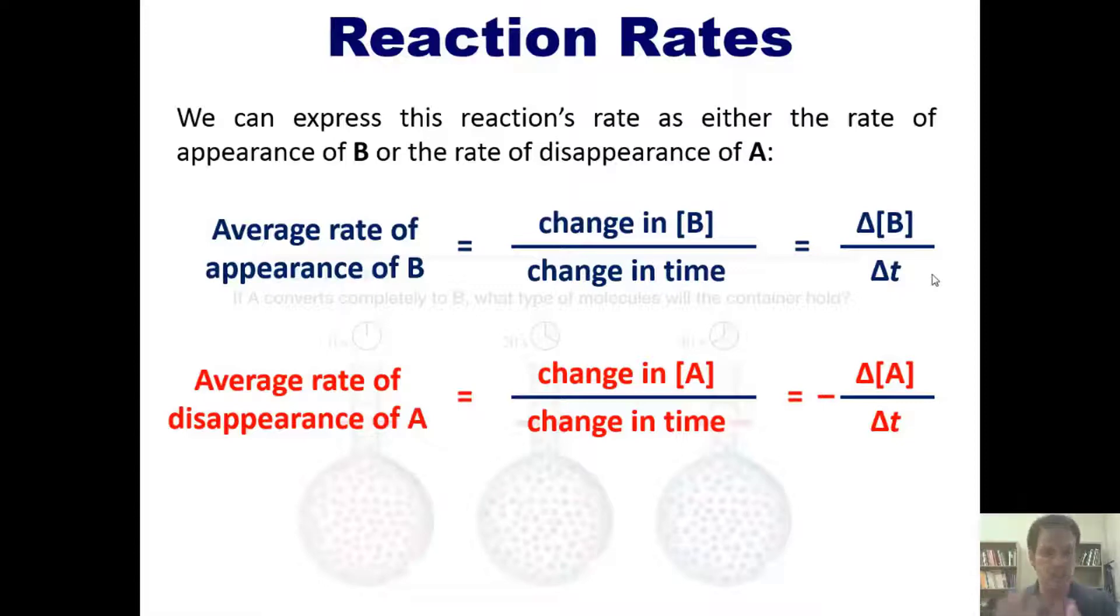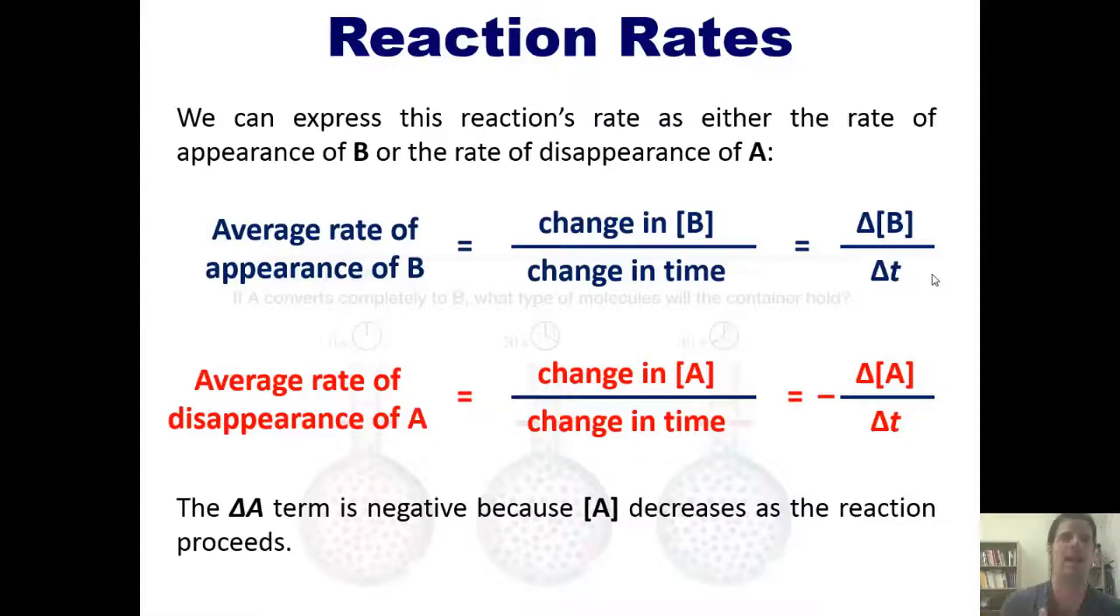If not, you're welcome to pause the video and look at this until you're able to kind of digest it. Now, the delta A term is, of course, negative because in this reaction, delta A is a reactant that is disappearing as time moves forward, because it converts into B.